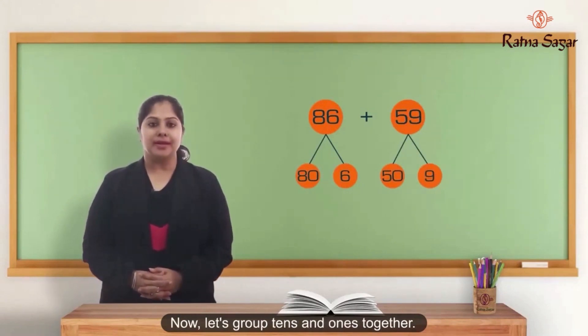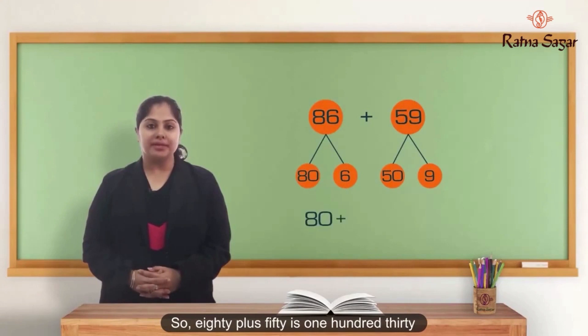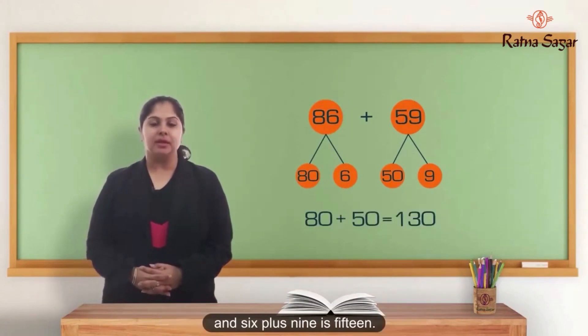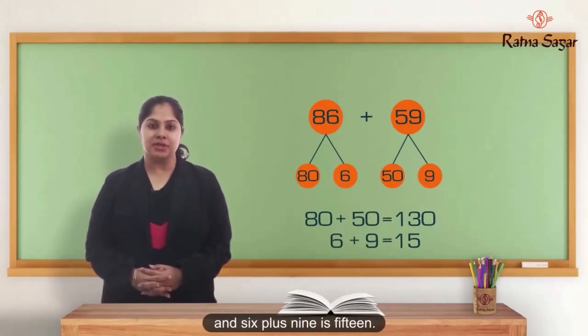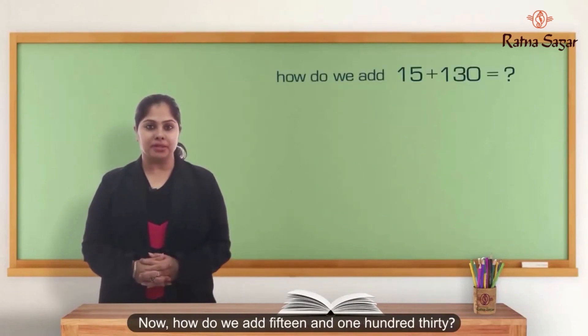Now let us group the tens and ones together. So, 80 plus 50 is 130, and 6 plus 9 is 15. Now how do we add 15 and 130?